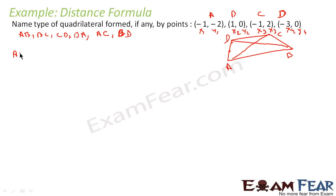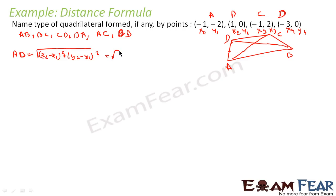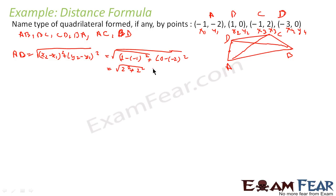Let us find AB. If we take points A and B, the distance will be root of (x2 minus x1) squared plus (y2 minus y1) squared. That is root of (1 minus minus 1) squared plus (0 minus minus 2) squared, which is root of 2 squared plus 2 squared, that is root of 4 plus 4, that is root 8, which is 2 root 2. That is the distance AB.